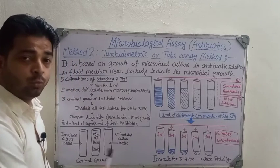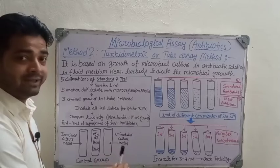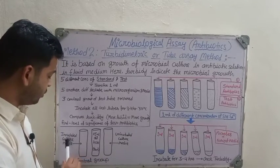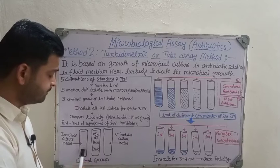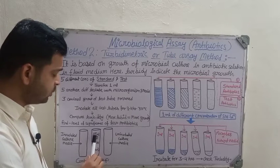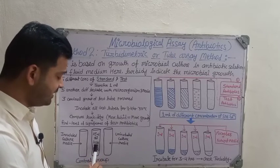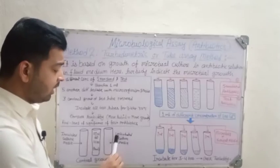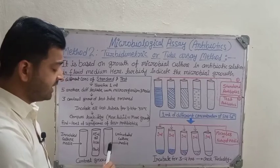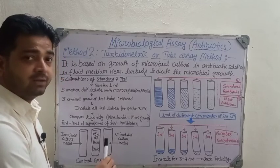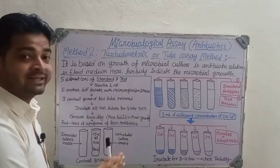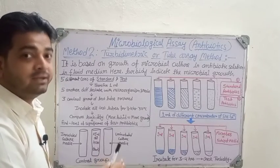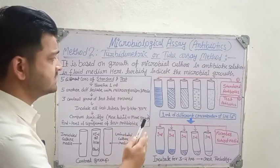At the same time, we also maintain three control groups for comparison. The first control group contains inoculated culture medium. The second is 0.5 ml dilute formaldehyde solution, which is considered a blank. The third is uninoculated culture media, with no incubation, so we can compare turbidity at the end.